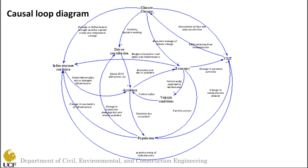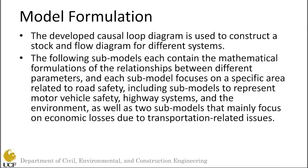After we look at the qualitative aspect and make sure that all the relationships are supported by the research done in the literature, we start looking at model formulation. The developed causal loop diagrams help construct the stock and flow diagram, which is the quantitative aspect of the SD modeling process. Each of the submodels contains mathematical formulations of the relationships between different parameters and focuses on a specific area of road safety, including motor vehicle safety, highway systems, environment, and economic losses.